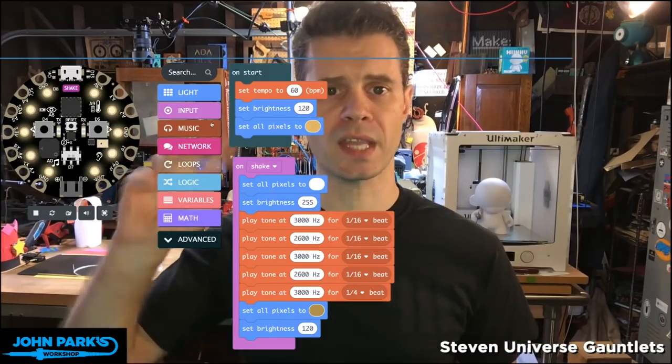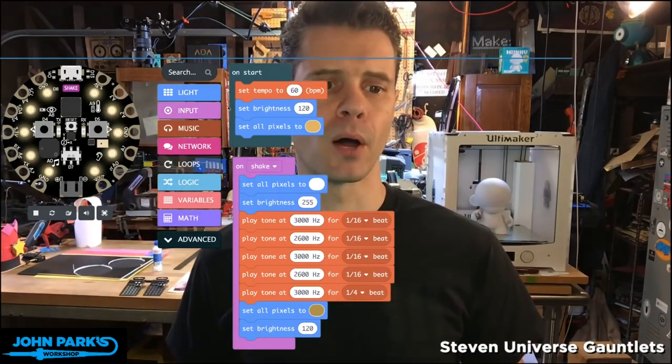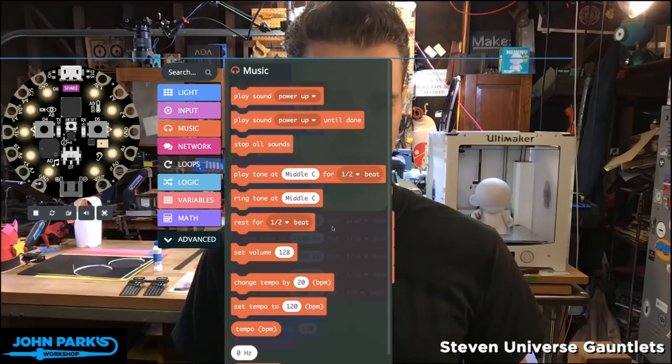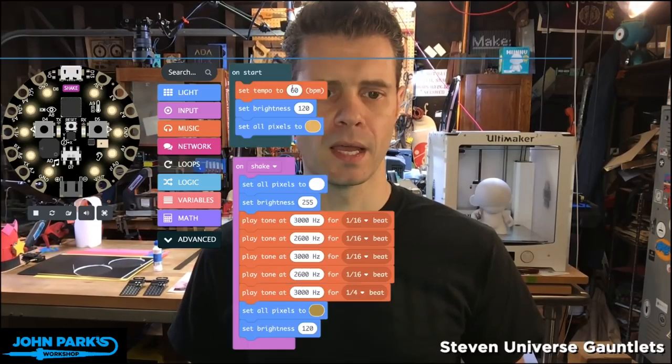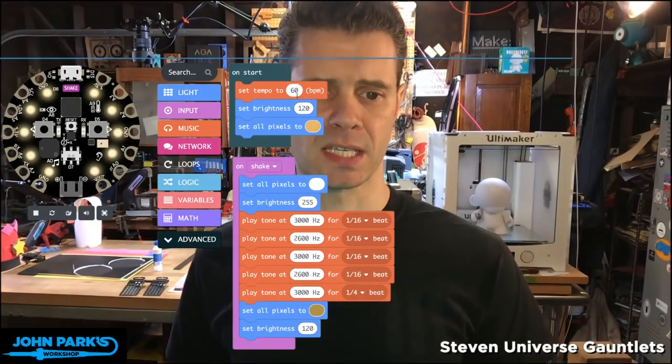So I'm going to do that with the music notes or tone, play tone instead. So when you're using that play tone, you want to set the tempo. So I head to music and I find the set tempo to, in this case it defaults to 120, and I'm going to set it to 60 beats per minute.